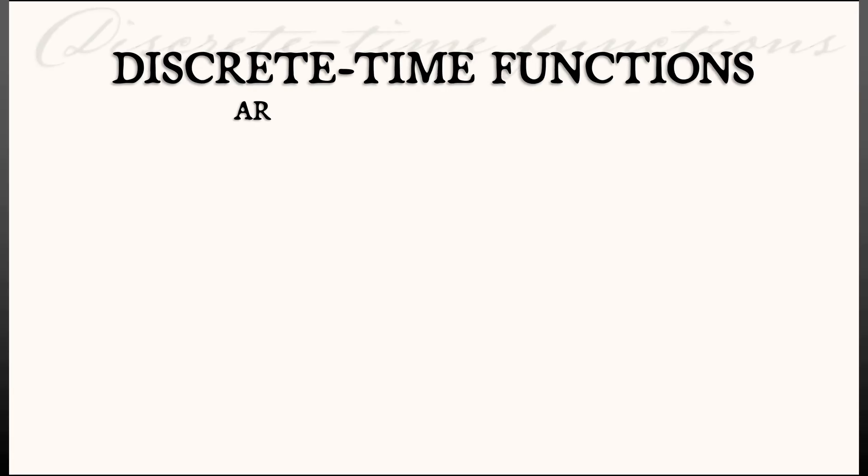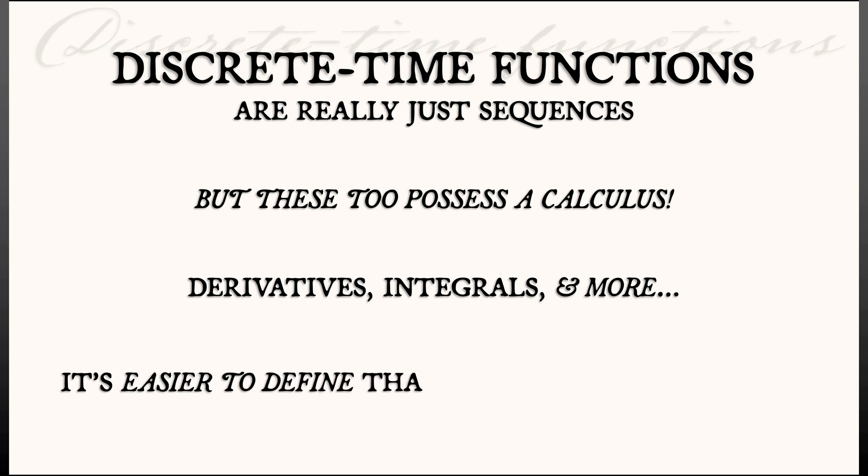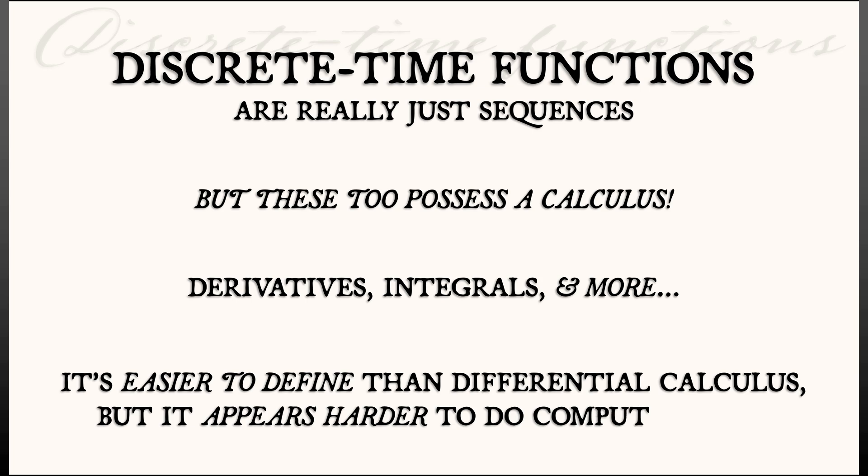Discrete time functions are really just sequences, but these too possess a calculus. You've got derivatives. You've got integrals. You've got all kinds of other good stuff as well. Now, in some sense, it's easier to define things in discrete calculus. We don't have to worry about limits. We don't have to worry about Riemann sums, anything like that. But it seems a bit harder to do computations. More on that next.